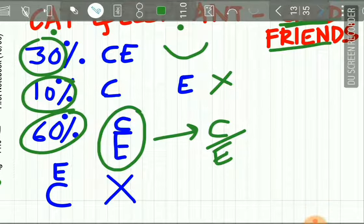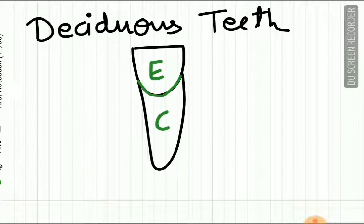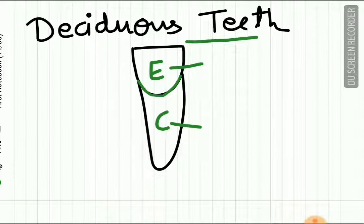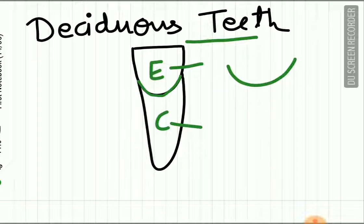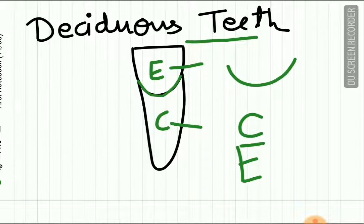The cementum can overlap the enamel, but the enamel will never overlap the cementum — just as only the cat can climb over the elephant, not the other way around. In deciduous teeth, the most common condition is that the enamel and cementum meet in a sharp line, and the second most common is that cementum overlaps the enamel.